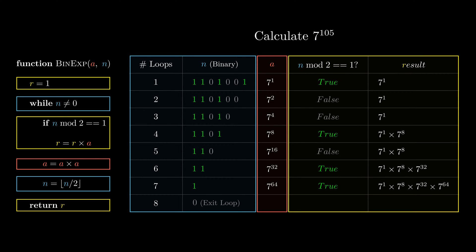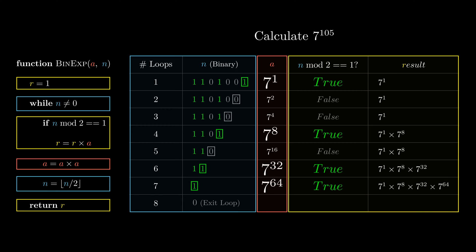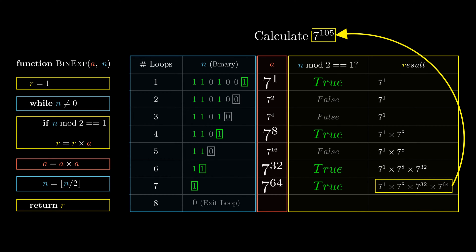Now, we can summarize the binary exponentiation algorithm. We examine each digit of n in binary, starting from the last digit. If we find a digit equal to 1, we will multiply r by a. In this case, a happens to be 7 to the power of 1, 8, 32, and 64. In the end, we can get 7 to the power of 105 correctly.